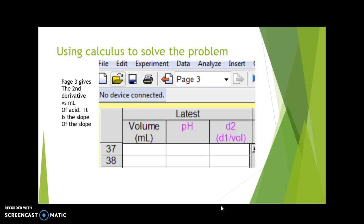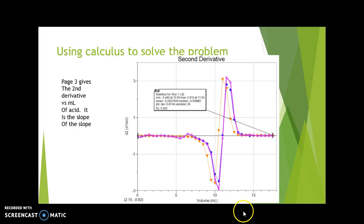Page three plots the second derivative of the pH against the milliliters of acid you've added. What the second derivative is, is the slope of the slope of the pH curve.